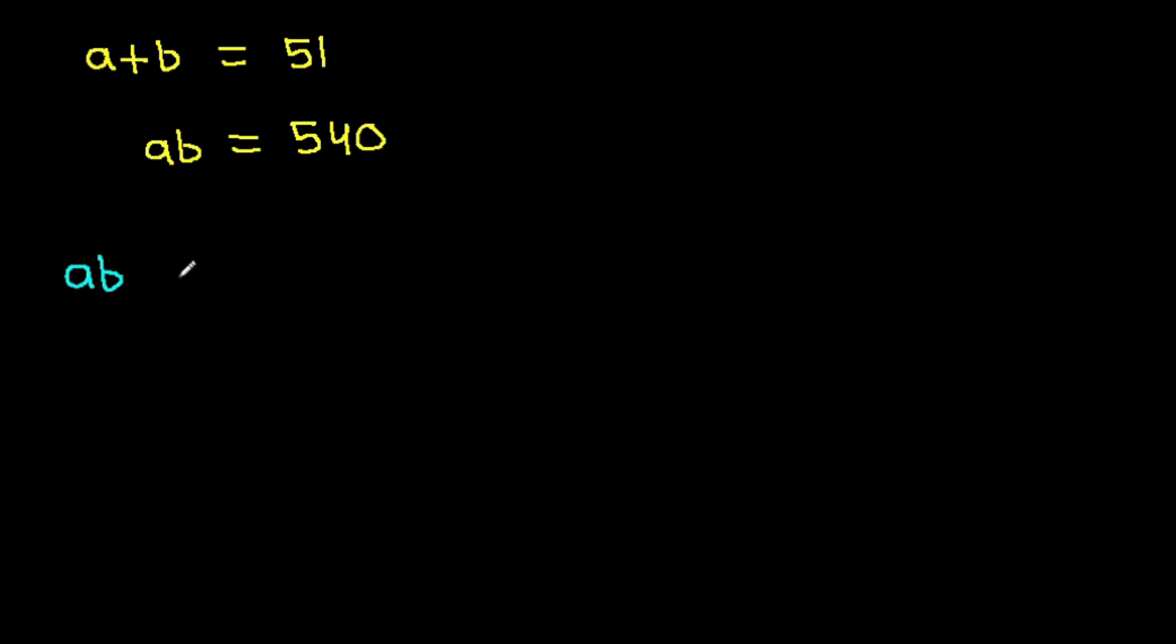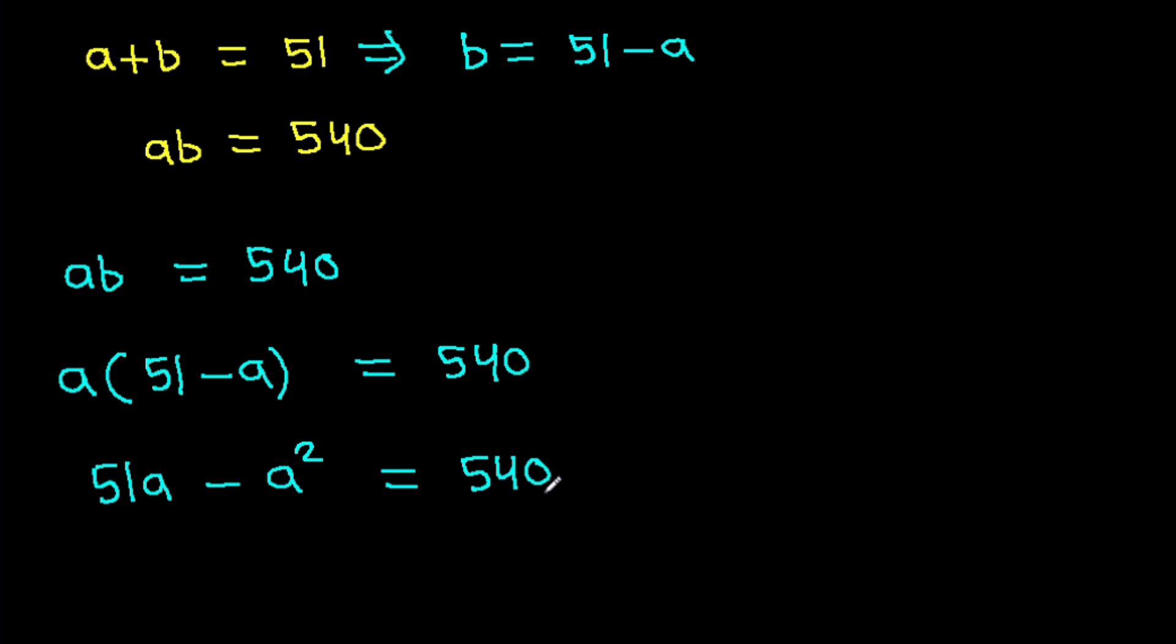We have AB is 540, and from here we can get b is 51 minus a. So it is a times b is 51 minus a, that equals 540. And it is 51a minus a squared equals 540, so a squared minus 51a plus 540 equals 0.